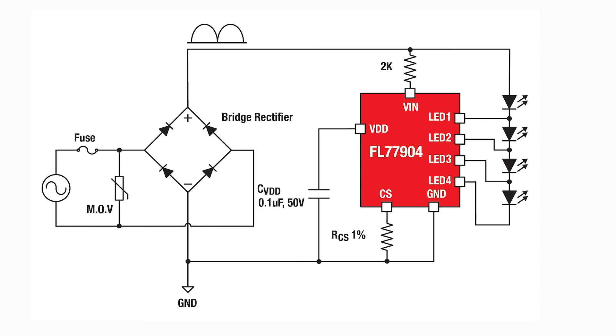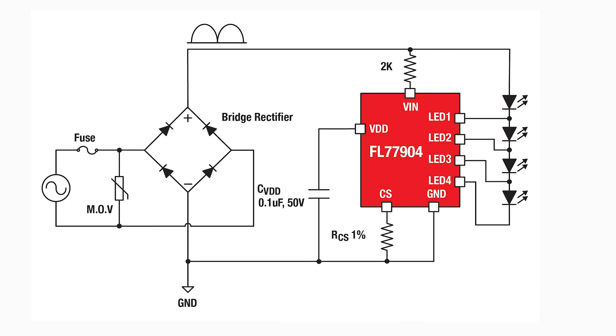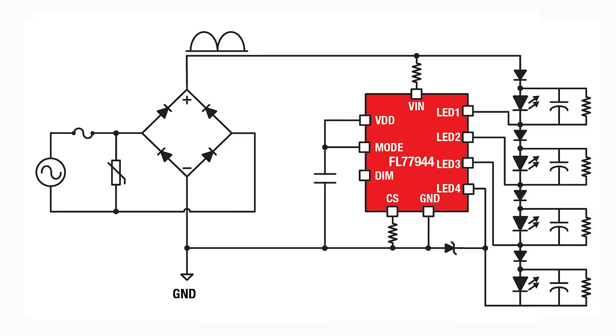The only drawback of this solution is the potential flicker induced when the AC line goes to zero. In many applications, this is not an issue. Our solution has a flicker index of about 0.3. For commercial and industrial applications, it can be tuned to meet specific requirements by adding a capacitor across each LED string. The capacitors store energy that enables the LEDs to be activated even if the AC line voltage is low. What stands out with the Fairchild solution is that the PF and THD will still meet commercial and industrial requirements even when the flicker is reduced close to 0%.